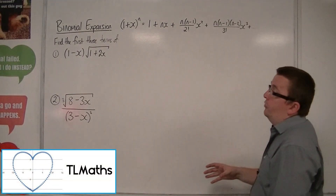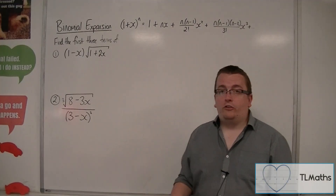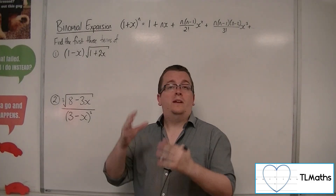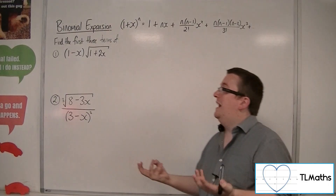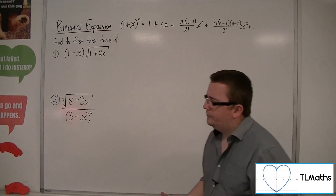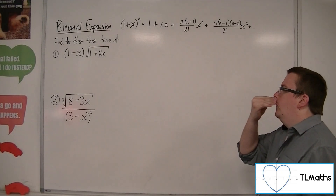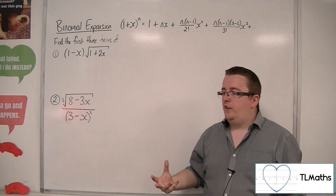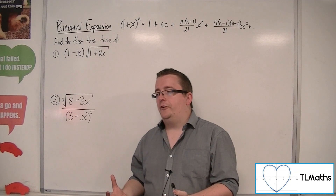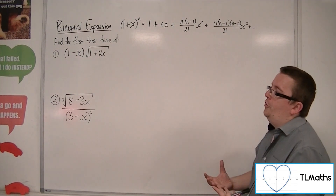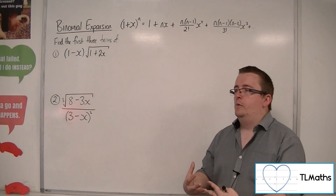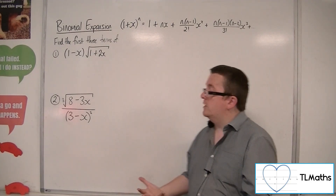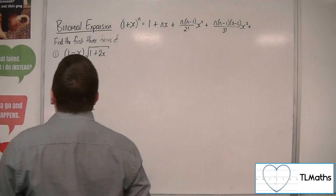In this video, I'm going to work through two trickier binomial expansions. In both cases, we're going to have to expand brackets — we'll get the expansion and then expand the brackets out as well, because we're multiplying them together. This first one, (1 minus x) times the square root of (1 plus 2x), is a particularly good example because there's a point where you think you've done enough, but actually you have to backtrack and do a little bit more work.